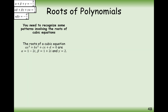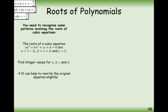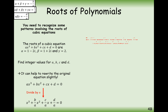Next question: the roots of ax³ + bx² + cx + d = 0 are 1 − 2i, 1 + 2i, and γ = 2. Find integer values a, b, c, d. It helps to divide through by a first, so we can read off b/a, c/a, and d/a directly. If any fractions remain we can multiply through by the denominator at the end. In this question we use the relationships in reverse — we're given α, β, γ and work backwards.